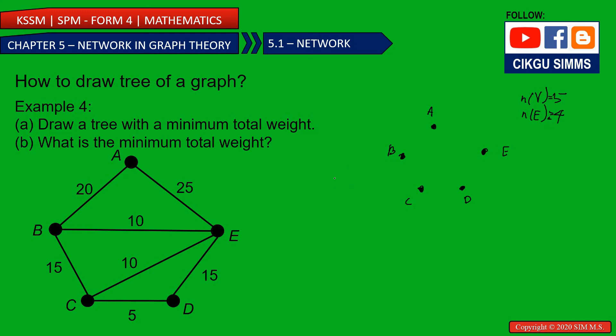So A must be connected to the rest of the graph. So it can be connected to B. It can be connected to E. So 20 and 25, I choose 20. So A is connected to B using 20. Because it wants the question asked for minimum. So I choose the lower number.